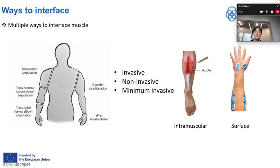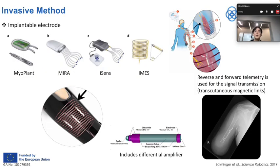Depending on the severity of the amputation and what level of signals we want to get, there are several ways to interface a muscle, starting from invasive, non-invasive, and minimally invasive. The invasive method implies implanting an electrical circuit inside the body and transmitting the data either wired or wirelessly to the assistive devices. This example uses reverse and forward telemetry for wireless transmission.